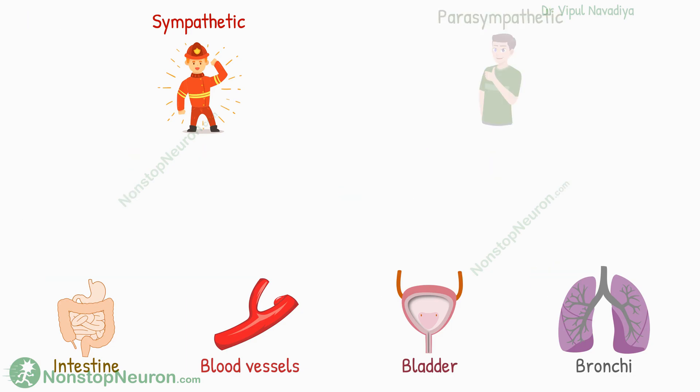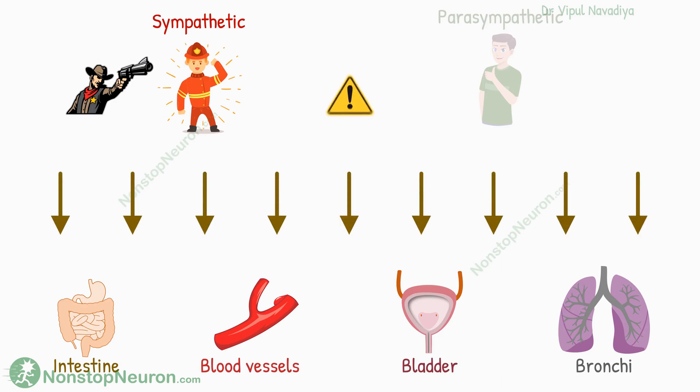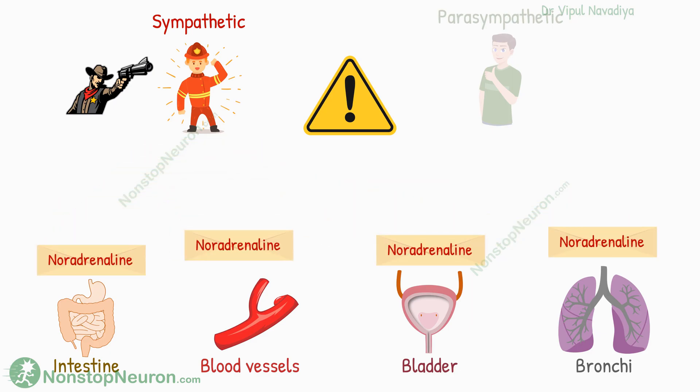First, we will see the sympathetic guy. He wakes up when there is a do-or-die situation, and his job is to tell all the smooth muscles in the body that there is an emergency. The sympathetic neurons release noradrenaline — or you can say, the sympathetic guy can type only one word in his message: noradrenaline. So in an emergency, all the relevant smooth muscles receive the same mail saying noradrenaline.